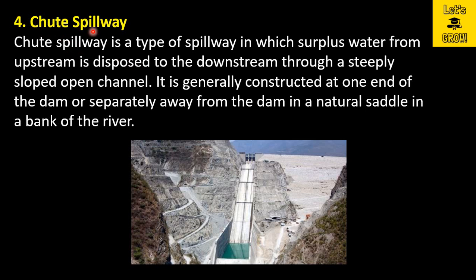The fourth one is the chute spillway. A chute spillway is a type of spillway in which surplus water from upstream is disposed to the downstream through a steeply sloped open channel. It is generally constructed at one end of the dam or separately away from the dam in a natural saddle in a bank of the river. In a chute spillway, the flow is always supercritical, meaning the velocity will be higher and there is a large chance of erosion. Suitable energy dissipation devices are used in case of the chute spillway.